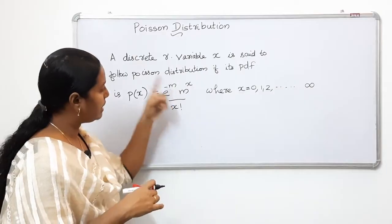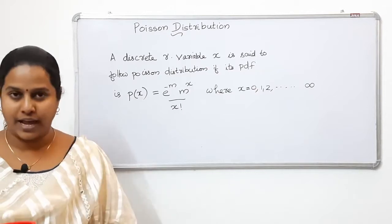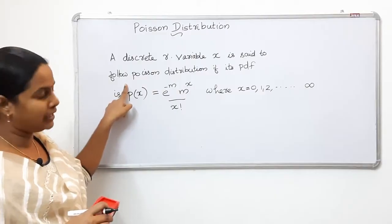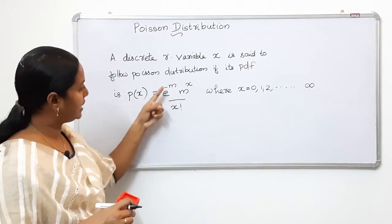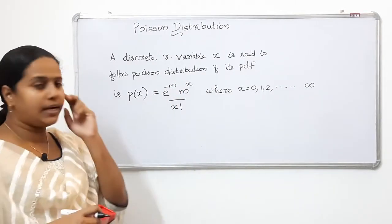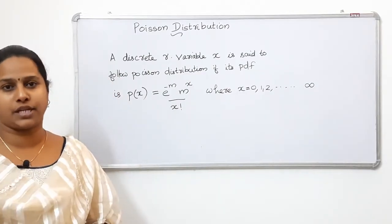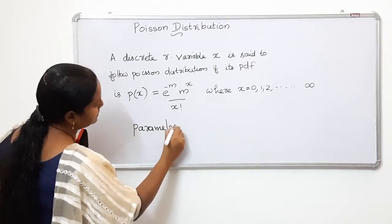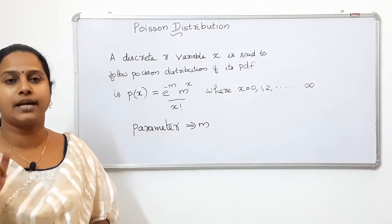The PDF is e raised to minus lambda, times lambda raised to x, divided by x factorial. We also write it as e raised to minus m, times m raised to x, divided by x factorial, for x = 0, 1, 2, etc. This Poisson distribution has one parameter, which is m.